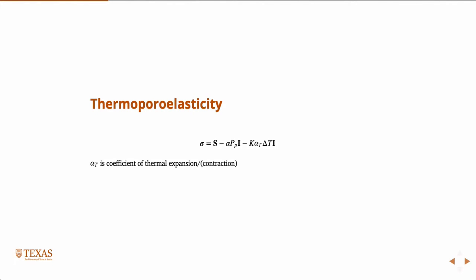Basically, it's how the material will expand when it's heated up. And then delta-T is the change in temperature, and this is also an isotropic effect. You see the identity matrix is being multiplied there, just like the pore pressure.